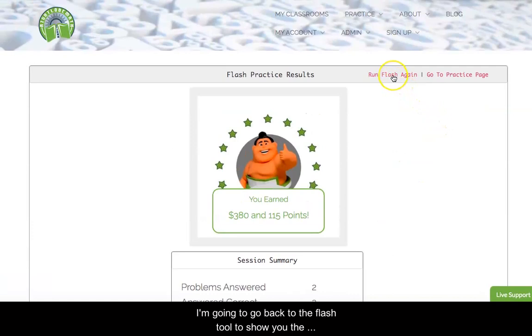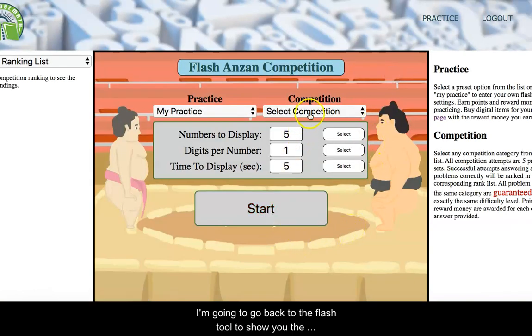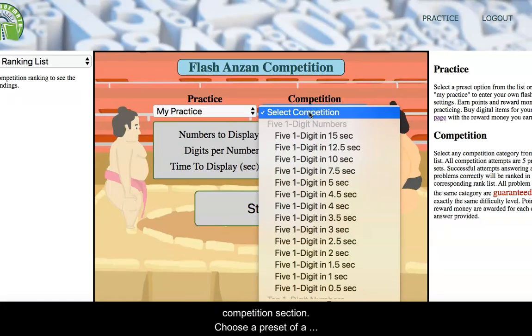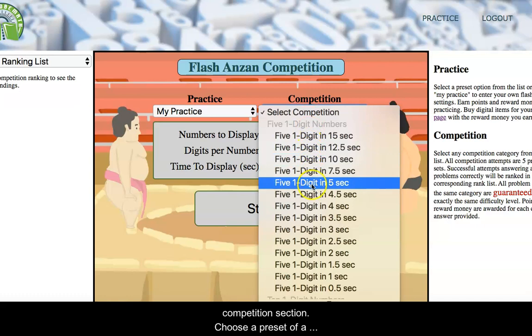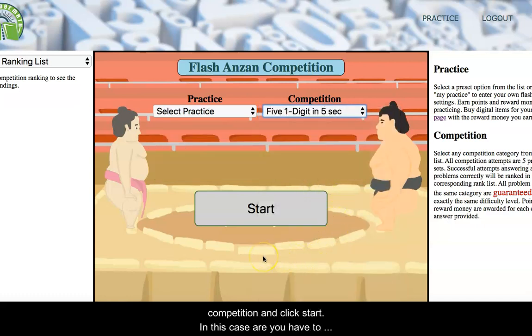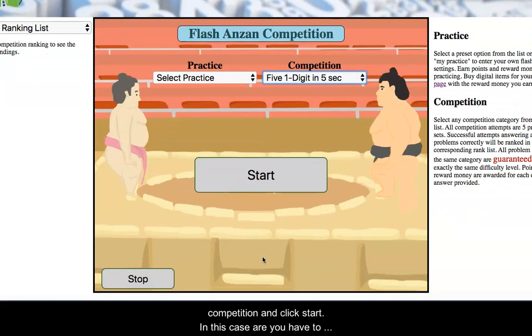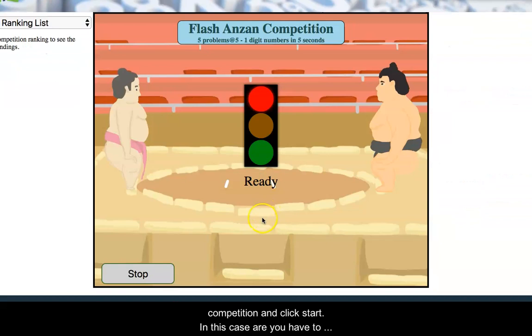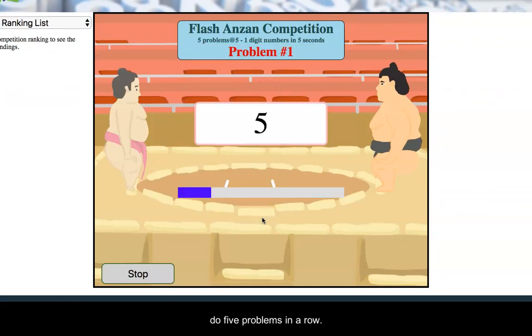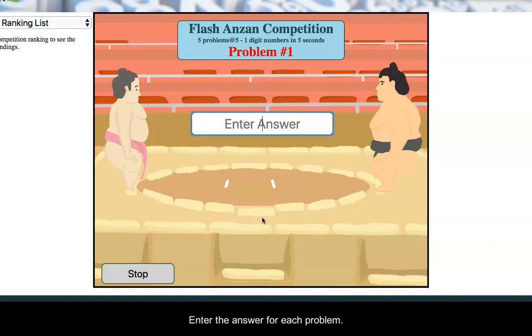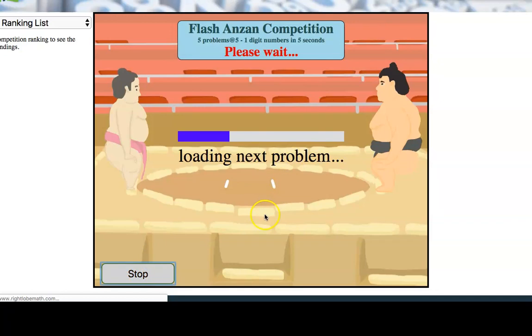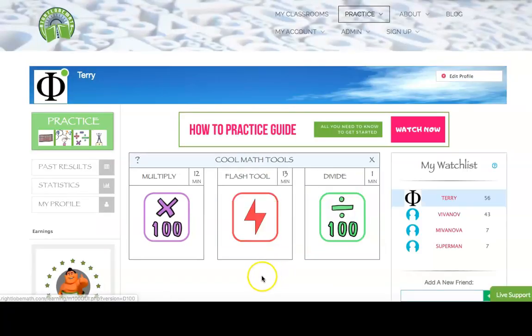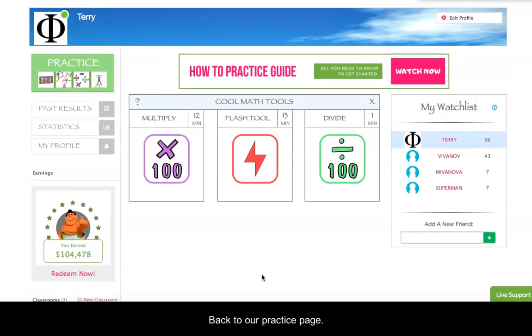And I'm going to go back to the flash tool here just to show you that in the competition section, you would choose a preset of a competition and then you just click start. And in this case, you will have to do five problems in a row and then you just enter the answer for each one and you would proceed that way. But I'm going to go ahead and stop this so we can come back to our practice page here.